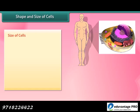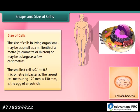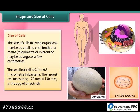Size of cells: The size of cells in living organisms may be as small as a millionth of a meter — micrometer or micron — or may be as large as a few centimeters. The smallest cell is 0.1 to 0.5 micrometers, found in bacteria. The largest cell, measuring 170 mm × 130 mm, is the egg of an ostrich.